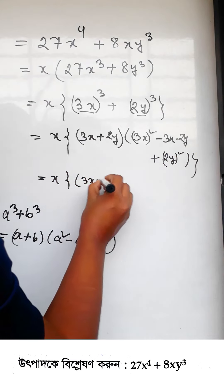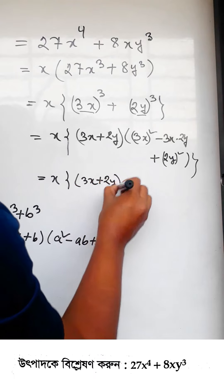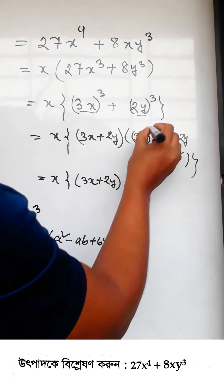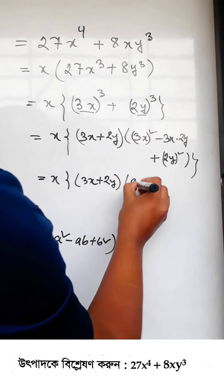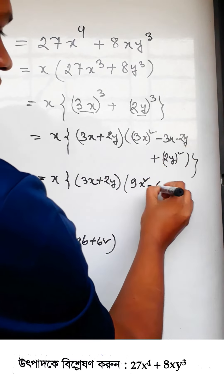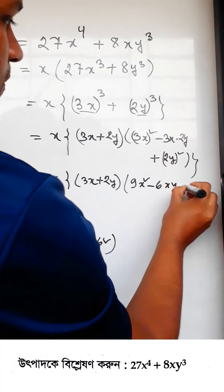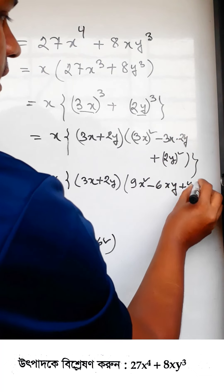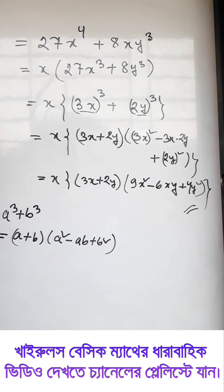Simplifying the second factor: (3x)^2 = 9x^2, minus 3x times 2y equals minus 6xy, plus (2y)^2 = 4y^2.